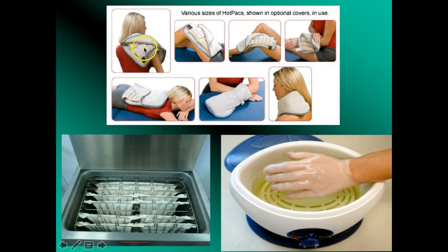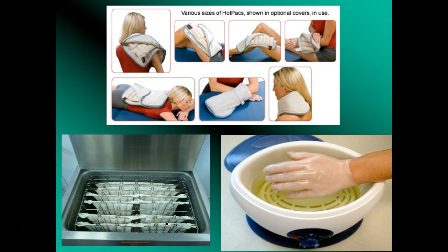Think about that guideline — the larger the contact area, the more heat transfer you get. So a larger pack will provide more heat transfer than a smaller shoulder pack. Here's what the hydroculator looks like. This is paraffin, which is a type of wax — you will do a skill check on this in lab. Ours is in a metal unit so we have to be careful not to put our hands on the side of it.